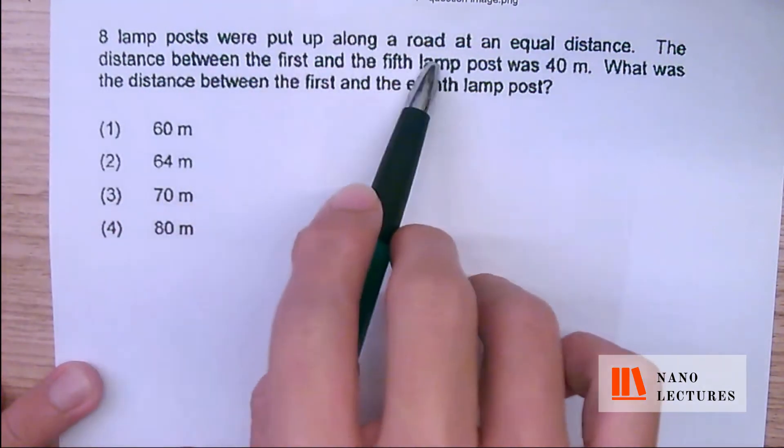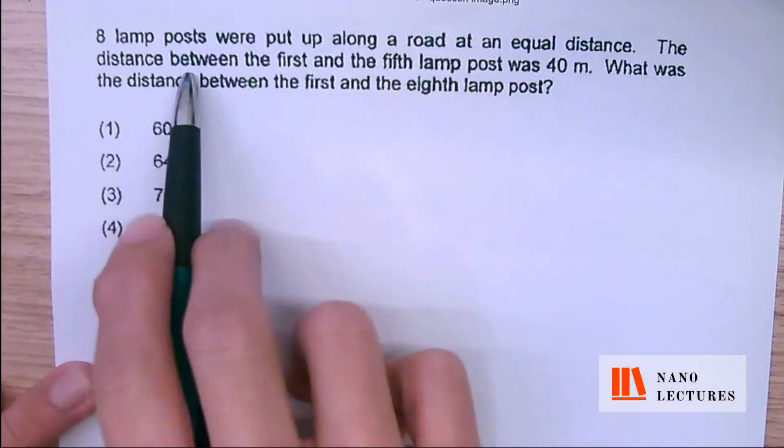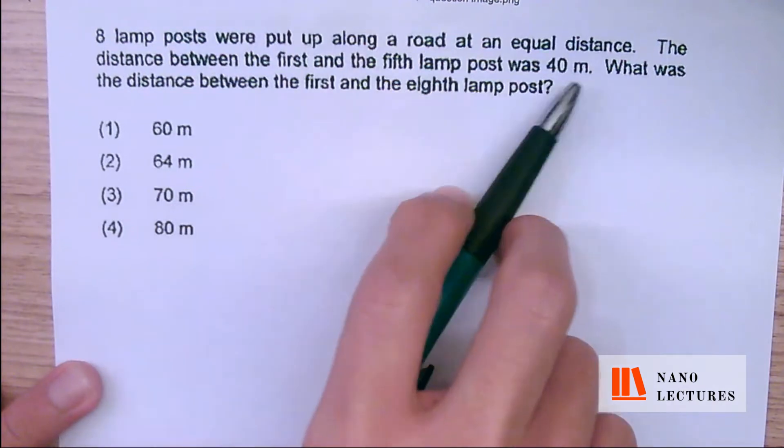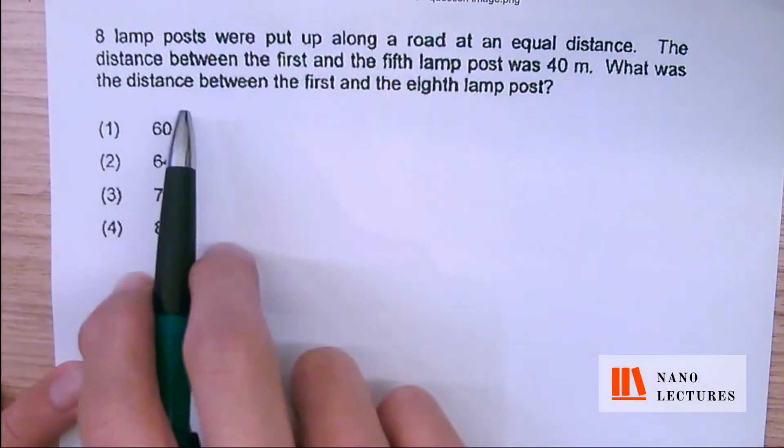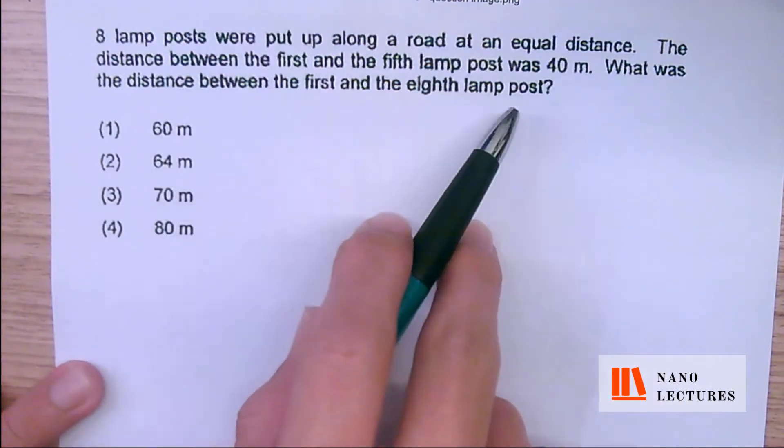8 lampposts were put up along a road at an equal distance. The distance between the 1st and the 5th lampposts was 50 meters. What was the distance between the 1st and the 8th lampposts?